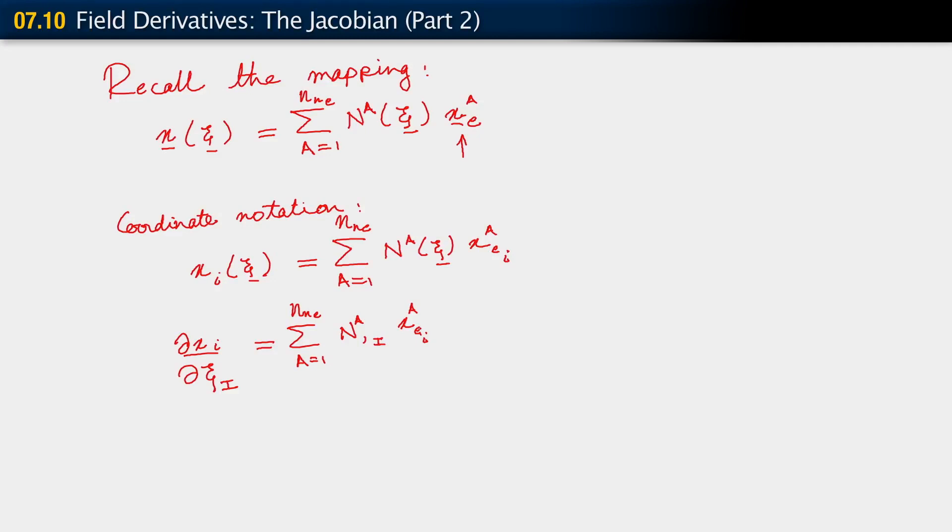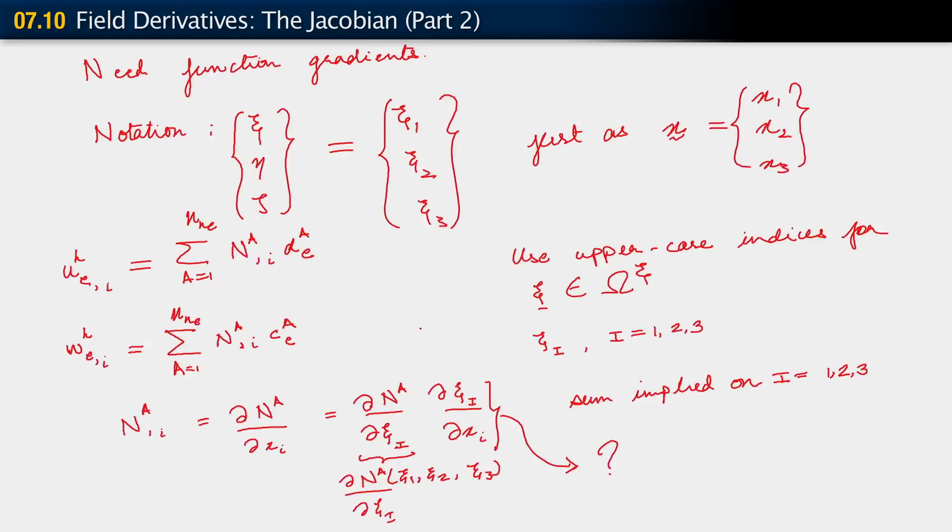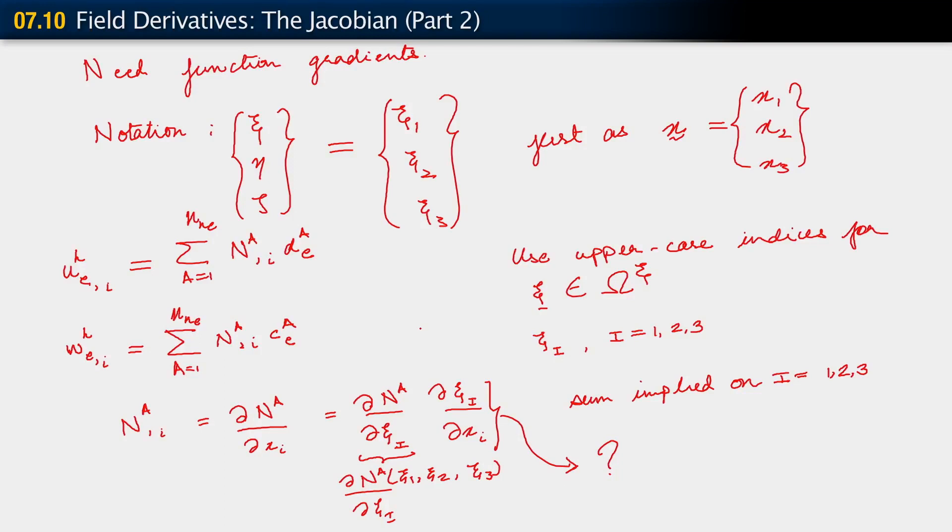Now, of course, this doesn't help us immediately because if you recall the form that the chain rule takes as shown here, what we need is actually the inverse of that gradient. Because we need the derivative of ci with respect to xi, the thing marked with a question mark. So how do we go about that?